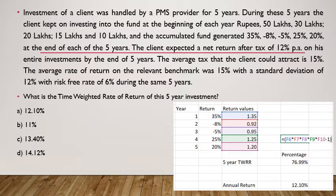The client expected a net return after tax of 12.5% on this entire investment by the end of the 5 years. The average tax that the client could attract is 15%. The average rate of return on the relevant benchmark was 15% with a standard deviation of 12% and a risk-free rate of 6% for the same 5 years. The first question asked is: what is the time-weighted rate of return? Let me explain this with the help of an Excel exercise.